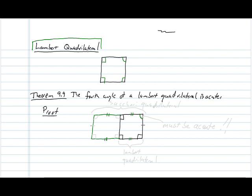And this side has the same length as this side. And so this is a right angle, this is a right angle, this is a right angle. And this angle here, of course, is the same as this angle, the fourth angle in the Lambert quadrilateral.